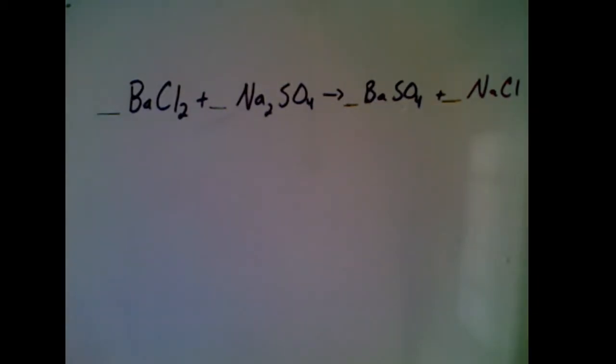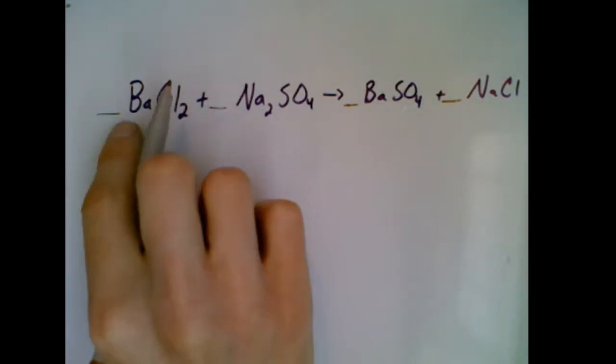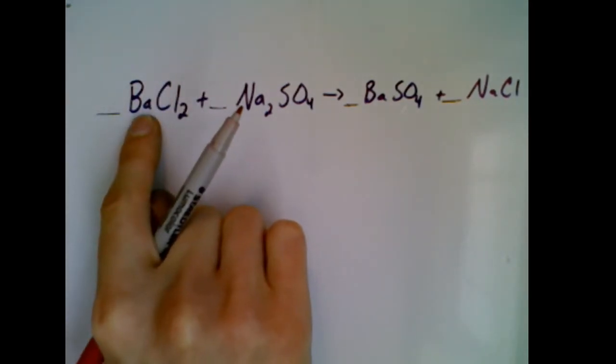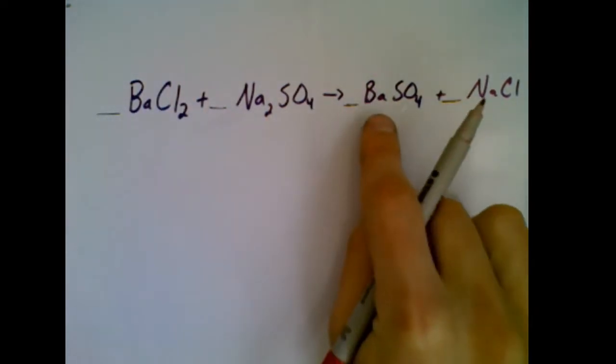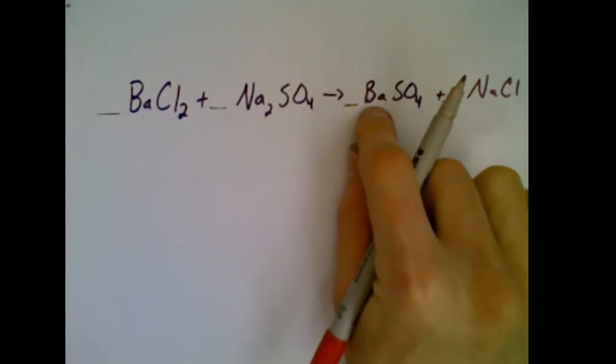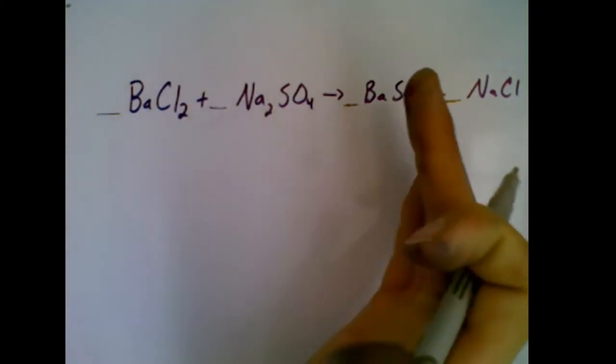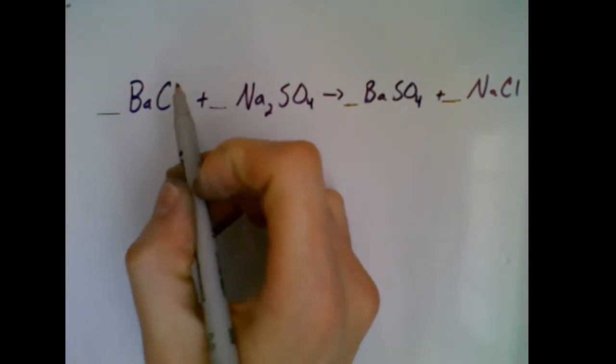I'm going to start at the beginning. I've got barium. How many bariums do I have? I have one on this side of the equation. On the other side of the arrow, I have one on this side of the equation. So the number of bariums that I have is balanced. So then let's move on.